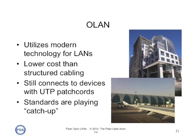So that's an OLAN — it uses modern technology, not 30-year-old technology. It's actually lower cost than structured cabling; it's been shown time and again that the lower cost of the electronics and the lower cost of the cabling are genuine. It still connects to devices with UTP patch cords, and of course that includes wireless access points. But right now the standards groups are playing catch-up when it comes to OLANs — they don't quite know how to fit it into their frameworks. However, the telephone company people have all their standards internationally for fiber-to-the-home, and they look just like what we're talking about with these optical LANs.